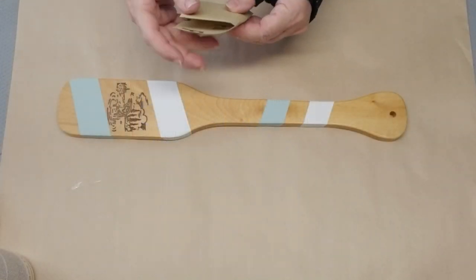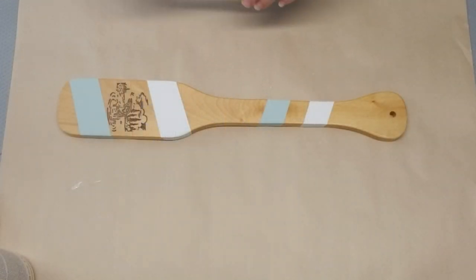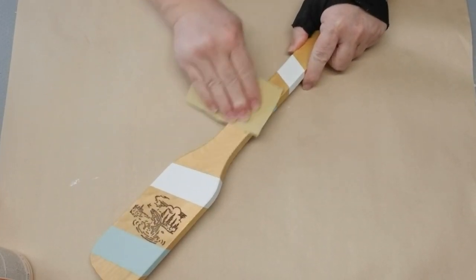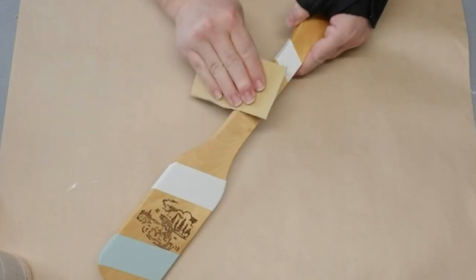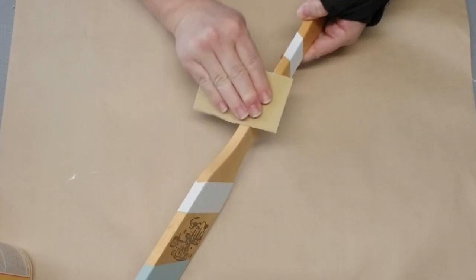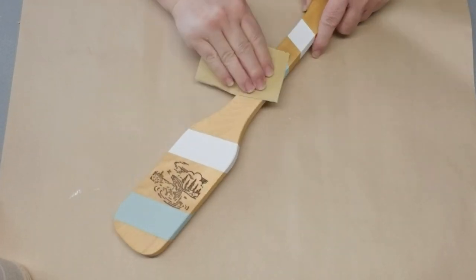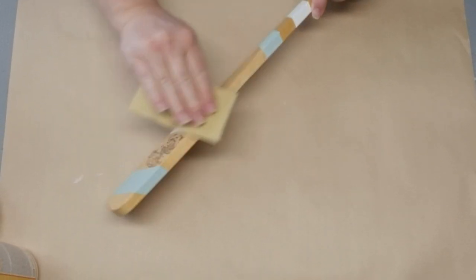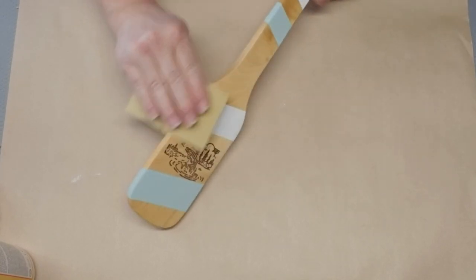This next project is super easy. I picked up this little paddle at a thrift store and it has a fish jumping out of the water embellished on there, but it also had some writing. So I painted white and blue stripes on it to cover that up and add a little color.